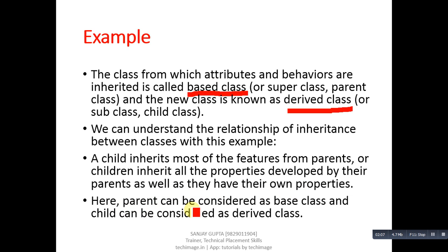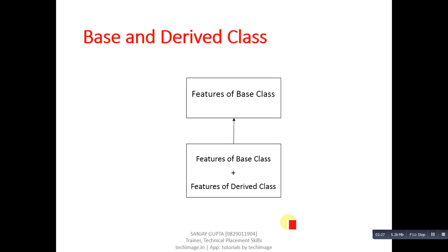Children inherit all the properties developed by their parents, as well as having their own properties. Here, the parent can be considered as the base class and the child can be considered as the derived class, because whatever properties the parent has will automatically belong to the child. The child can develop their own properties and also use the parental properties.